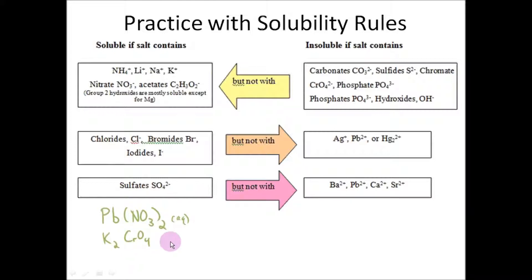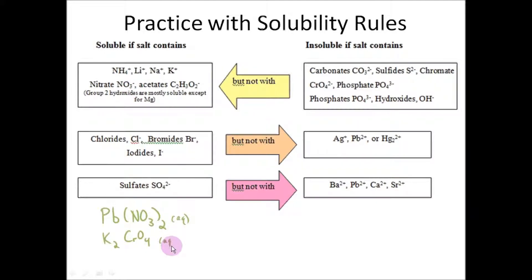Let's do potassium chromate. Let's see if potassium chromate is soluble or insoluble. Chromates (CrO₄²⁻) are right here on the chart, and potassium is here. Most chromates are insoluble, but we follow the arrow over, and the arrow says: not if there's potassium included. So potassium chromate is going to be soluble — it's aqueous. The key here is to start with the anion; if you start with the anion, this chart usually won't fail you.